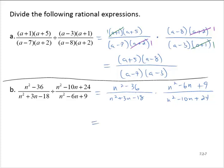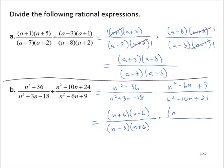Now let's factor each expression. n²-36 is a difference of squares and factors as (n+6)(n-6). The denominator n²+3n-18 factors as (n-3)(n+6). The second numerator n²-6n+9 factors as (n-3)(n-3). And the second denominator n²-10n+24 factors as (n-4)(n-6).